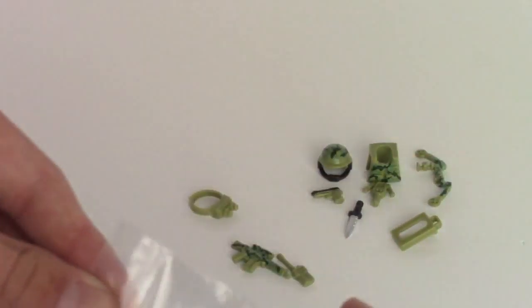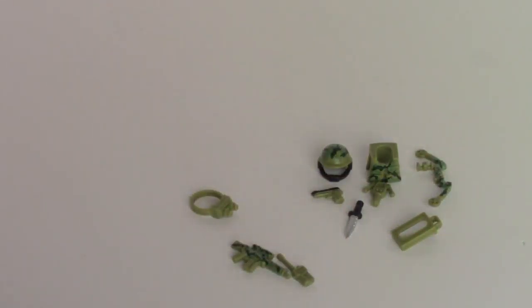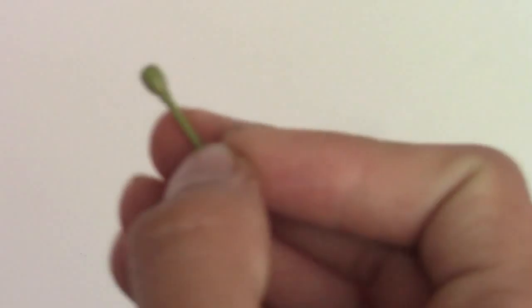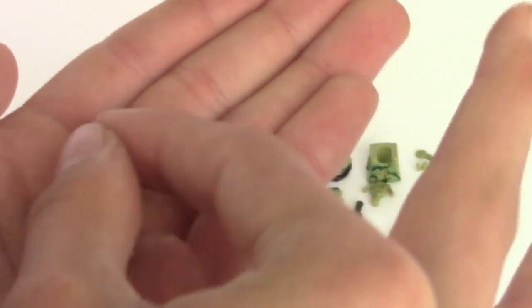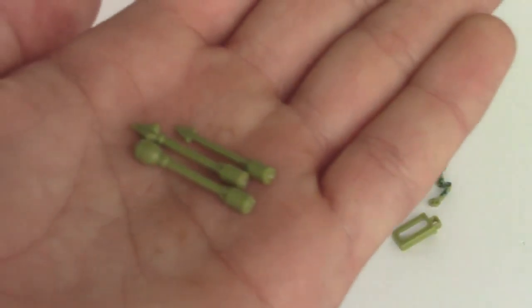Then you get a pack of arrows here. One of these is the bomb arrow. Then you just have two other types there.